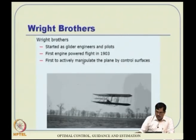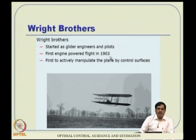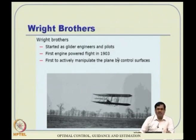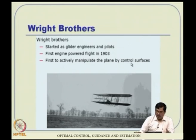The next big credit goes to the Wright brothers. They started as glider engineers and later became pilots as well. They did a lot of wind tunnel testing followed by optimization of the wing structure. Most credit for the Wright brothers' successful flight goes to the control surface — they were the first to realize that uncontrolled flights are simply not possible. You need a control system for successful flight. It was also the first engine-powered flight in 1903, just about 105 years back, and within that period there has been tremendous improvement in this field.